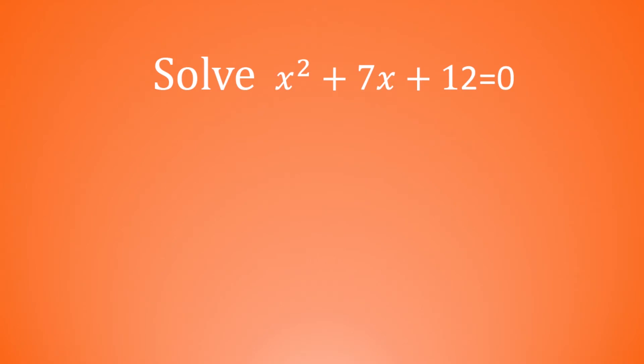Solve x squared add 7x add 12 is equal to 0. So we've got a quadratic equation here. In order to solve it, we're going to factorize that equation first of all. To factorize it, we're looking for a pair of numbers that multiply together to make 12 and that add together to make 7.